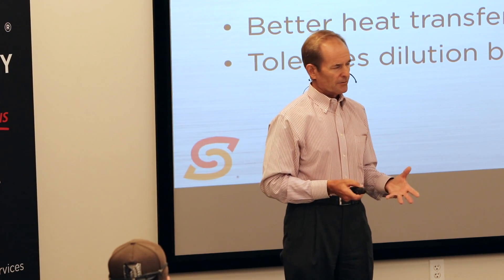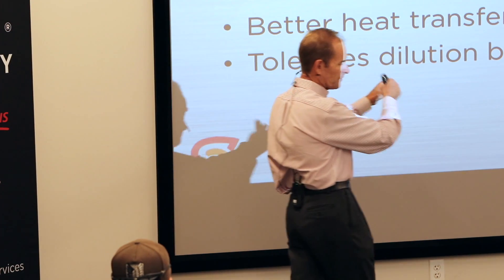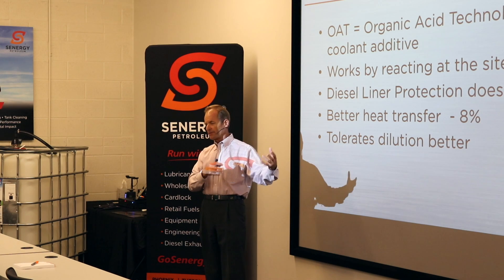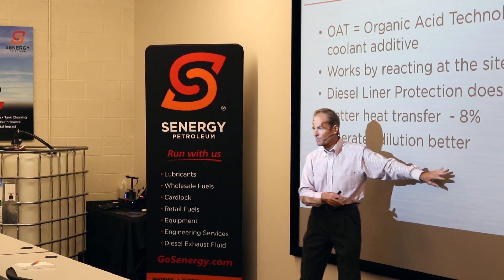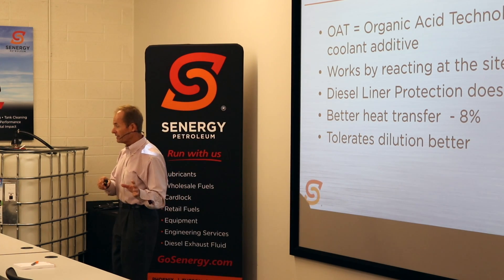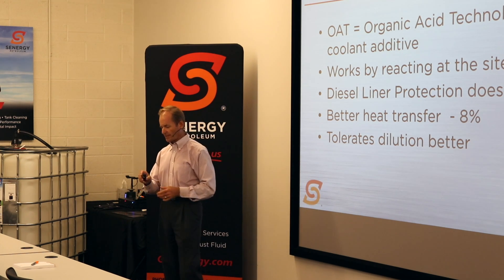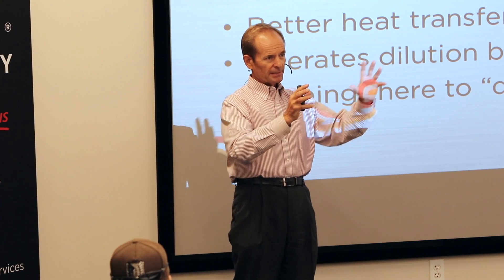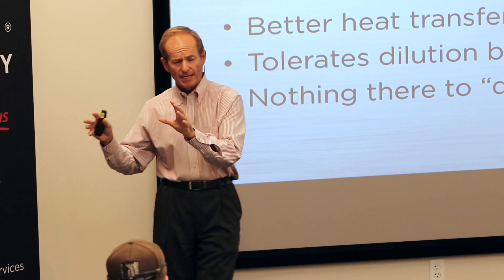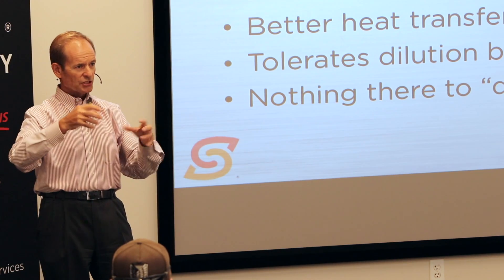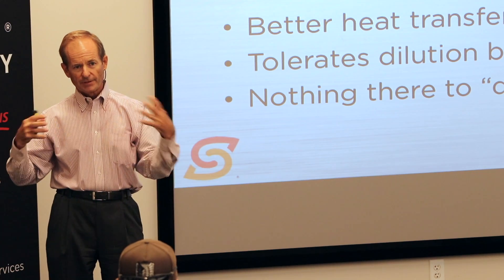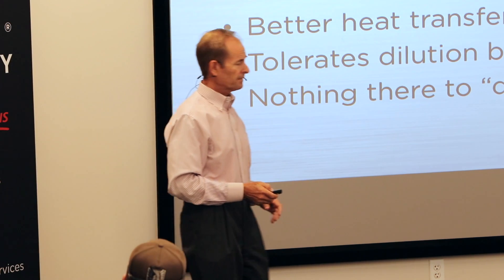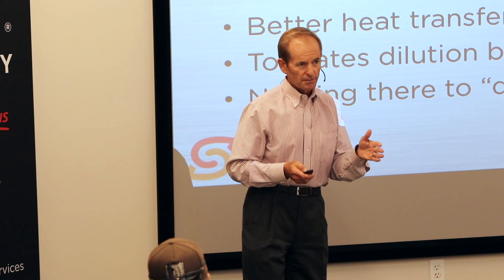Organic acids also tolerate dilution better. Because of the way these additives float around, a 10% or 20% dilution barely affects them — they're still floating around in there and still have a good chance of finding that little spot of corrosion starting. And on the organic acid side, there's nothing to drop out of solution the way silicates do — you don't have that same balancing act problem. It's an entirely different mechanism than your conventional silicated product.